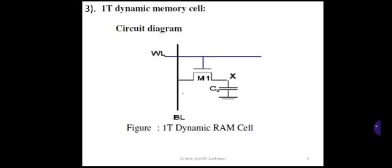The next circuit is the 1T dynamic memory cell. The figure shows the 1T dynamic RAM cell, which consists of only one transistor — a one-transistor dynamic random access memory cell. It also has two operations: read and write. It consists of a word line WL and a bit line BL, and a capacitor CG which can be charged during the write operation from the BL line, provided the WL word line is high.